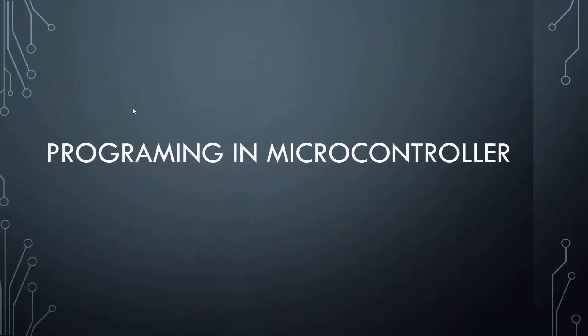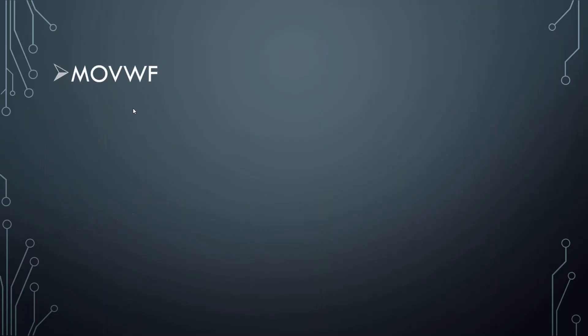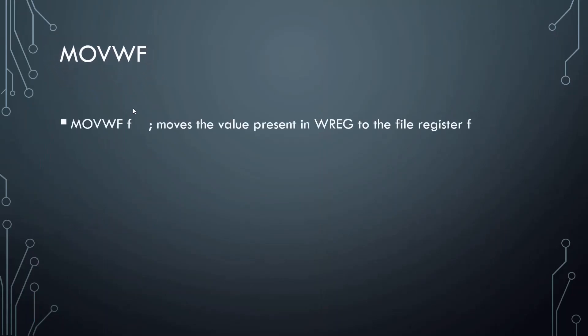Hi guys, so in this video we will be covering the instructions MOVWF and ADDWF. The instruction MOVWF is used to move a value. Whichever value is present in the working register gets moved to the file register. We will mention the address of the file register here.